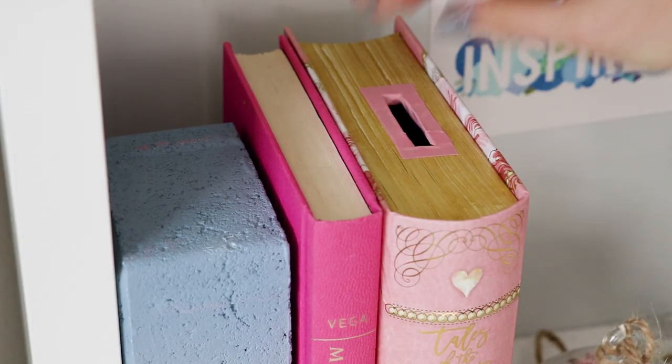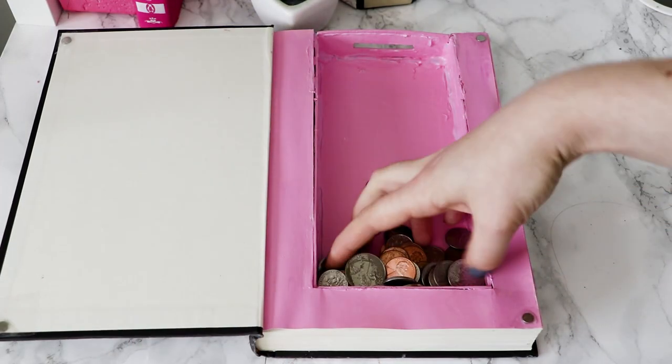So I would love to know which one would you make, the easy version out of a book box or the more difficult version out of an actual book? And what are you saving up all of your change to buy? Let me know in a comment right down below.